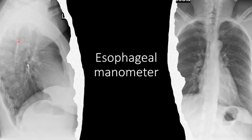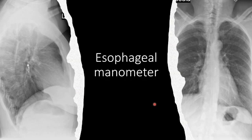Esophageal manometry is part of the workup for gastroesophageal reflux disease, dysphagia, achalasia, and other systemic diseases associated with esophageal problems such as scleroderma. Its role is to demonstrate esophageal abnormal motor function. Some of these manometry catheters are very difficult to see and they almost look like a swallowed earring.